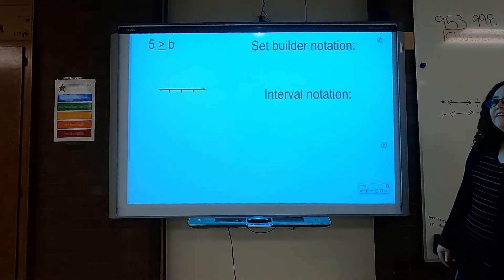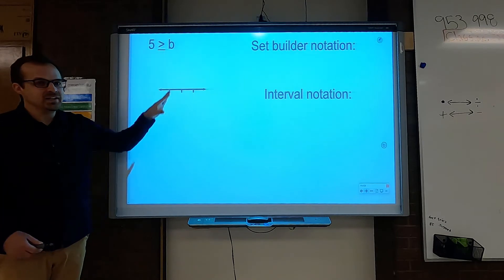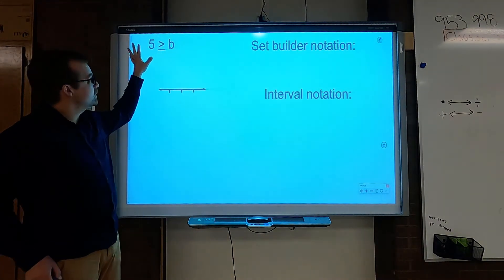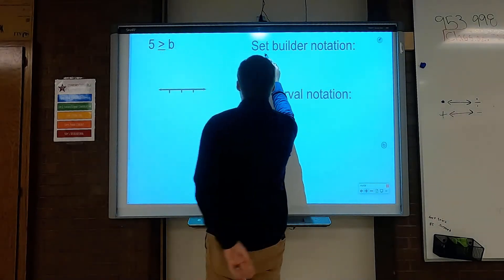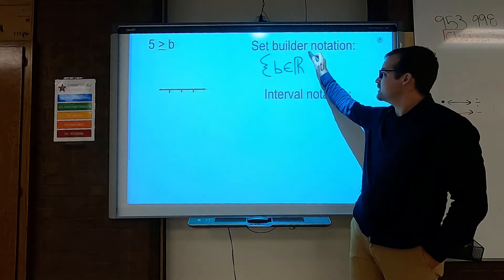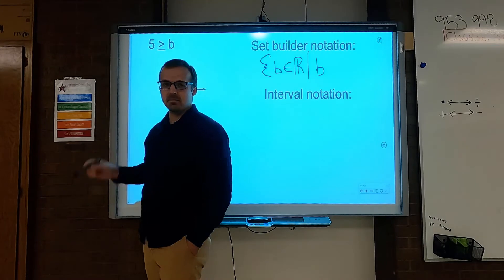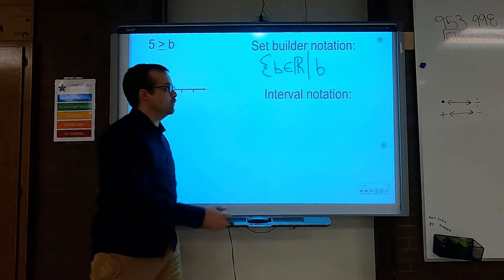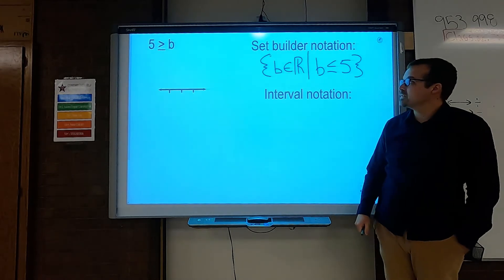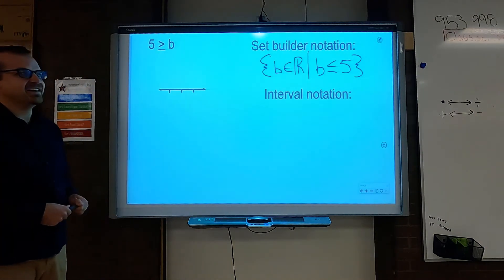Mr. Nelson, help us out here. Alright, so in this one we're not going to have the graph — we're given an inequality instead. I would always say, make sure that you graph the inequality. Set builder notation is going to be really easy on this one because I'm already given the inequality. Let's start with our funky chicken brackets. We've got b as our variable. So we're going to say b is an element in the real numbers such that b — if I'm putting the variable first — it has the mouse. So we are going to give it a mouse, and that is going to be less than or equal to 5. There's your set builder notation.